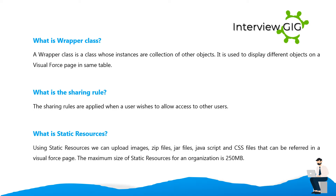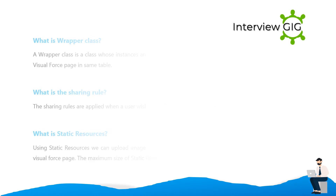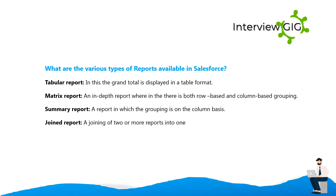What are static resources? Using static resources, we can upload images, zip files, JAR files, JavaScript, and CSS files that can be referenced in a Visualforce page. The maximum size of static resources for an organization is 250 MB. What are the various types of reports in Salesforce? Tabular report — grand total is displayed in a table format. Matrix report — an in-depth report with both row-based and column-based grouping. Summary report — grouping on a column basis. Joined report — a joining of two or more reports into one.